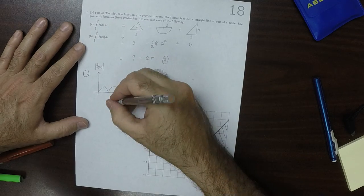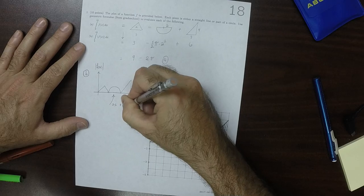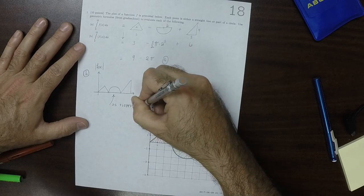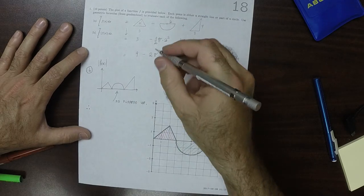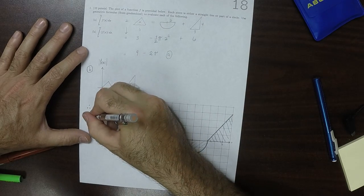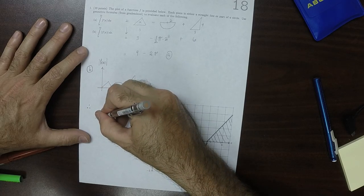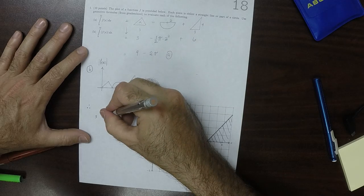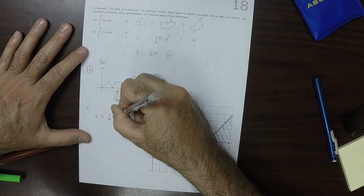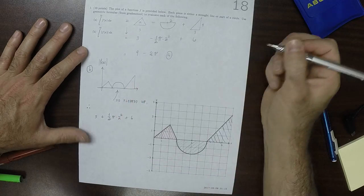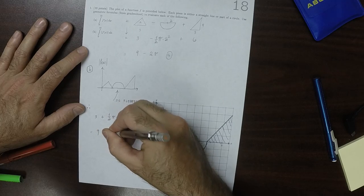So this is flipped up. And as a result, it's going to be the sum of those. It will be 3 plus 1 half pi r squared plus 6. So that would be equal to 9 plus 2 pi.